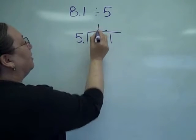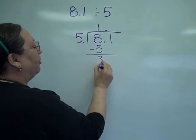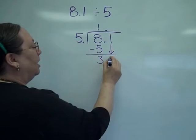5 goes into 8 one time. 1 times 5 is 5. Subtract. 3 left over. Start again. Bring down the 1.